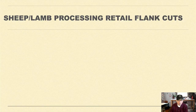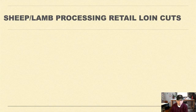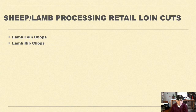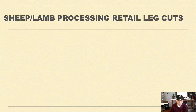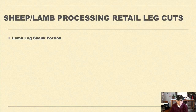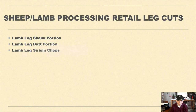The lamb processing retail flank cuts are lamb flank rolled boneless. Processing retail loin cuts are lamb loin chops, lamb rib chops, and lamb rack. The processing retail leg cuts are lamb leg shank portion, lamb leg butt portion, lamb leg sirloin chops, and lamb hind shank.